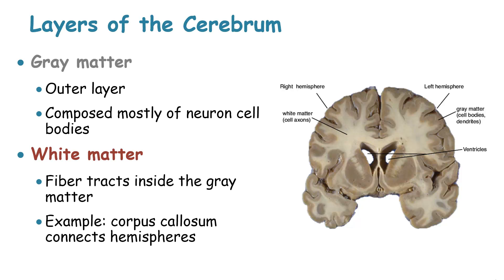The cerebrum is made of two main layers: the grey matter and the white matter. The grey matter is the outer layer that is composed mainly of neuron cell bodies. The white matter, on the other hand, has fiber tracts inside the grey matter. For example, we have the corpus callosum, which connects the right and left hemispheres.